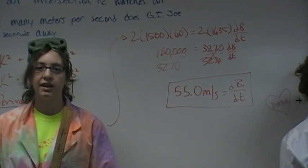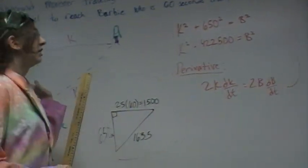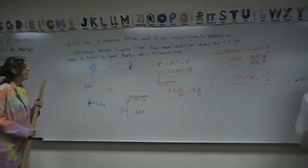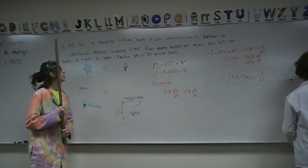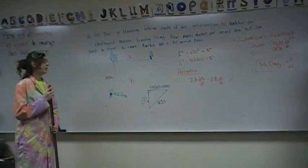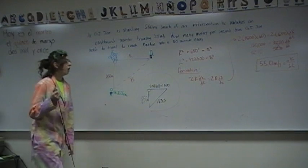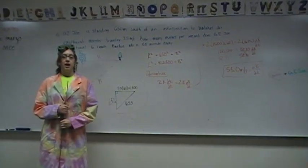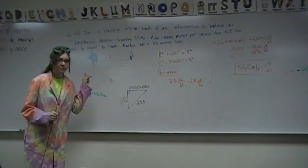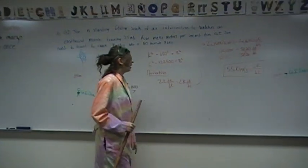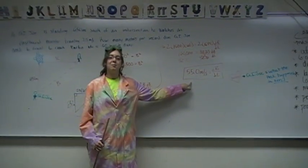That, folks, is the answer to this problem. So we now know how many meters per second does G.I. Joe need to travel to reach Barbie who is 60 seconds away. We now know that in order to reach Barbie and save her from that atrocious monster, he must go 55 meters per second.